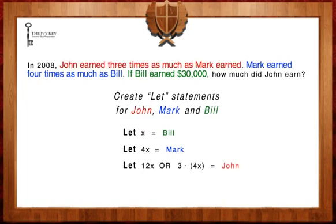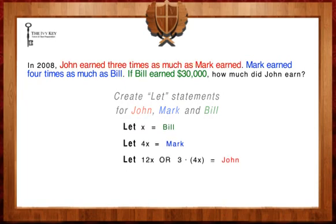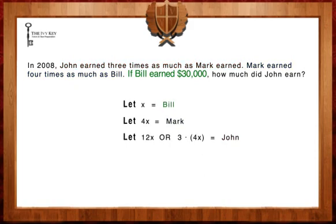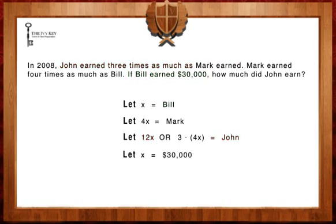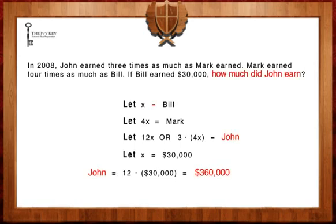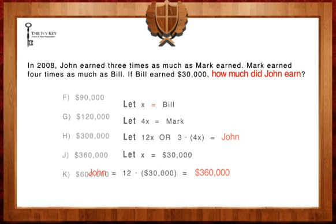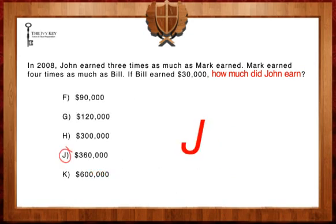If Bill earned $30,000, we're going to let X equal $30,000. Since John equals 12X, we're going to multiply 12 times $30,000. 12 times $30,000 equals $360,000. Therefore, John earned $360,000, and the answer is J.